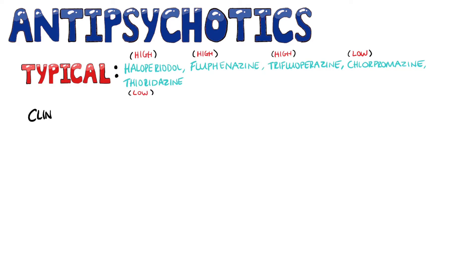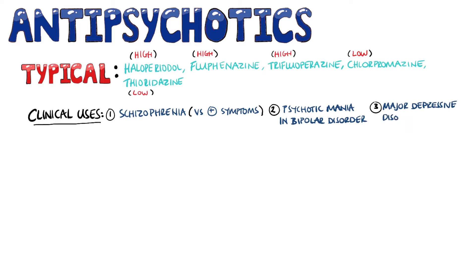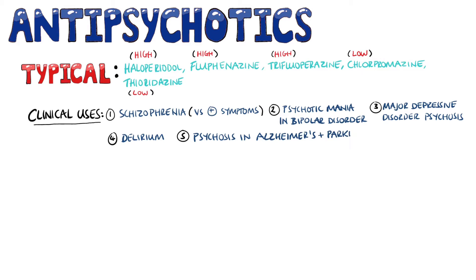The clinical uses of the typical antipsychotics include schizophrenia, more so against the positive symptoms like delusions and hallucinations, rather than the negative symptoms like flat affect. They're also used against psychotic mania in bipolar disorder, major depressive disorder psychosis, delirium, as well as psychosis in Alzheimer's and Parkinson's.